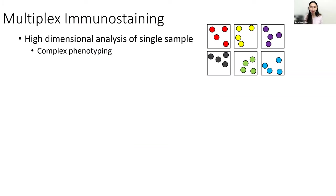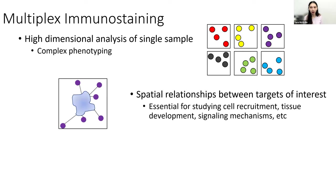The topic of today is multiplex immunostaining, and this is a great method for high-dimensional analysis of a single sample, where you can get many antibodies to do really complex phenotyping. And unlike, say, flow cytometry or RNA-seq, you can also get these spatial relationships between targets of interest, and this is essential for studying things like cell recruitment, tissue development, signaling mechanisms, et cetera.